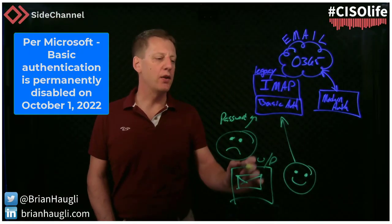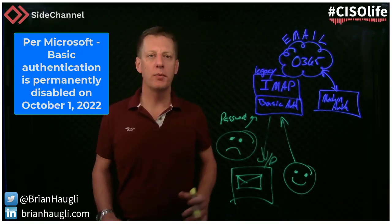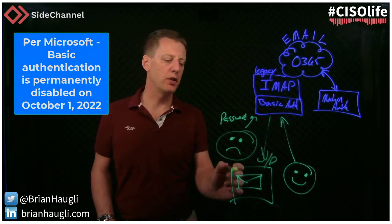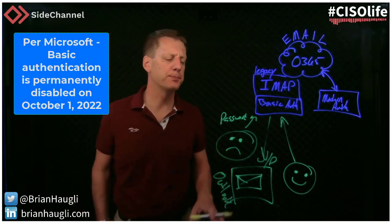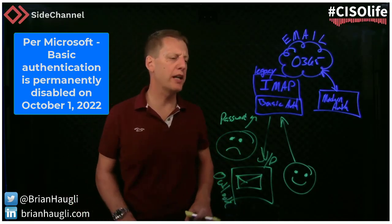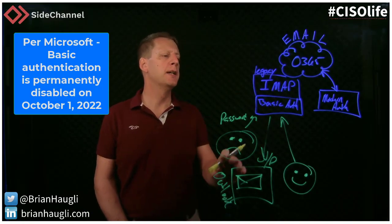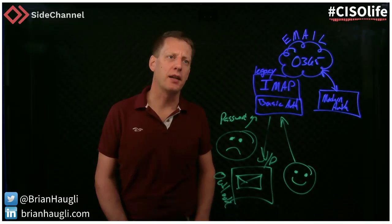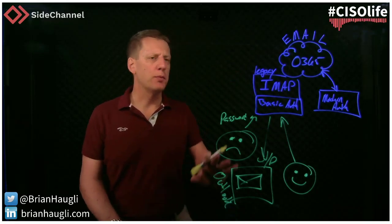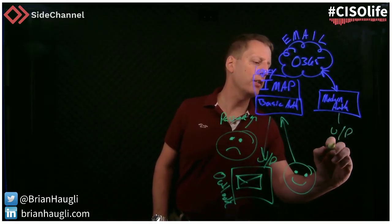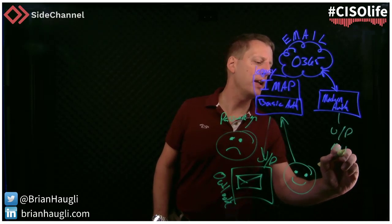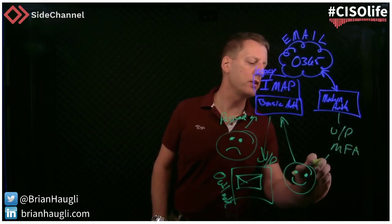IMAP pulls down all of that email into your mailbox — this would be your Outlook client — pulling down your information. This doesn't necessarily require MFA, and that seems to be the problem. Using modern authentication, you're able to use username and password and also MFA for legitimate usage.